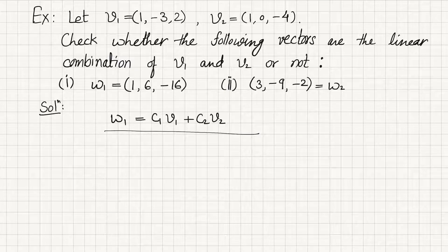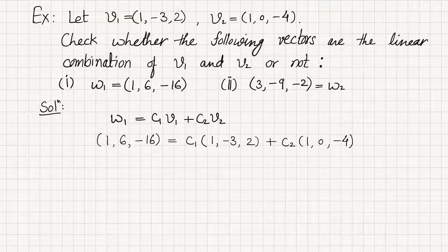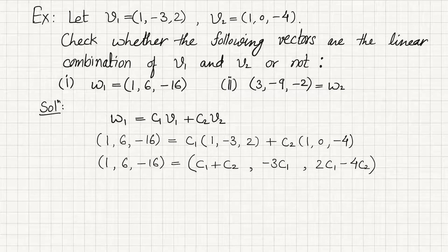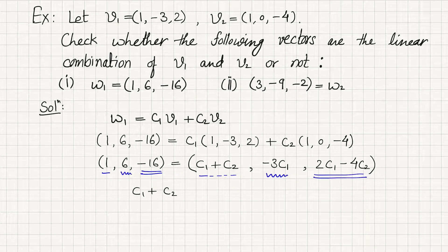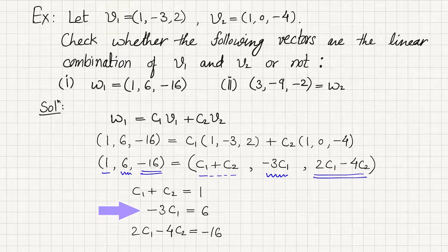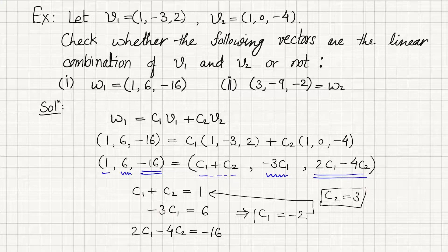Put the values of w1, v1, and v2 into the equation. w1 is given, v1 is given as (1, -3, 2), and v2 as (1, 0, -4). After multiplying and simplifying, since two vectors are equal only when their corresponding components are equal, we get three equations. Solving these, c1 comes out to be -2 and c2 comes out to be 3. Verify with the third equation — it is satisfied.